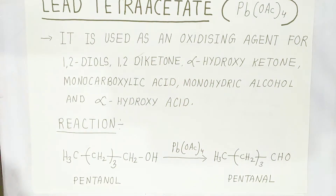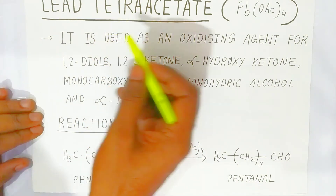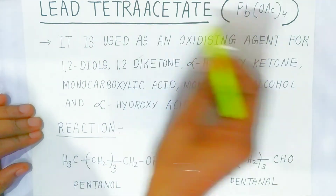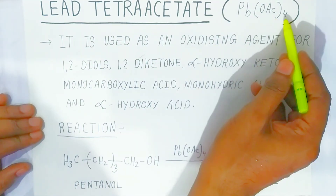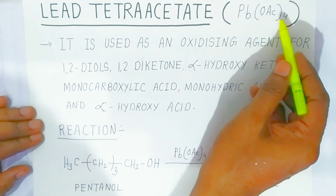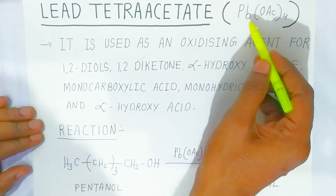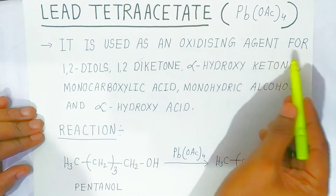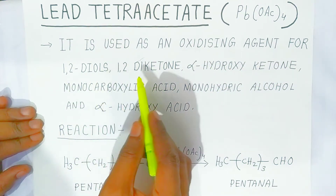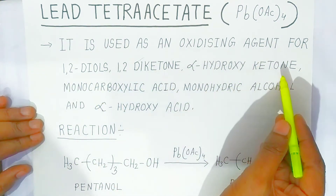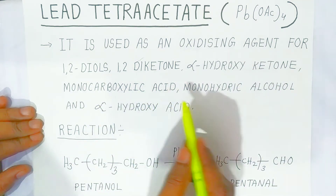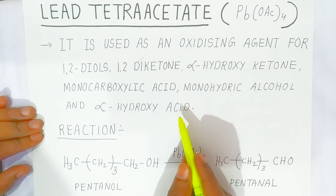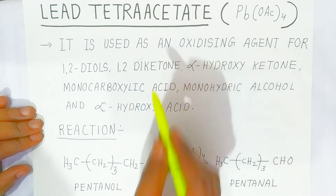The next type of oxidizing agent is lead tetraacetate. It has four acetate groups attached to lead — that is why it is called lead tetraacetate. It is used as an oxidizing agent for 1,2-diols, 1,2-diketones, alpha-hydroxyketones, monocarboxylic acids, monohydric alcohols, and alpha-hydroxy acids.